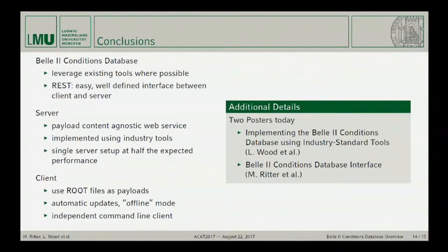In conclusion, we have a Belle II conditions database that tries to leverage all existing tools wherever possible. It's a RESTful API — an easy, well-defined interface used between client and server. The server is a payload-content-agnostic web service that provides the metadata and the files but doesn't need to know what's in the files, implemented using industry tools. The single-server setup is already at half the expected needed performance, and we're still in the process of federating to a more complex setup. The client uses ROOT as the default file payload format with automatic updates and an offline mode, and has an independent command-line client implemented in Python. If you want to see more details on both of these, we have two posters available later today.